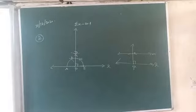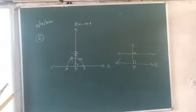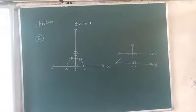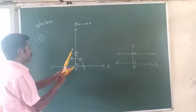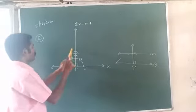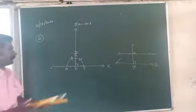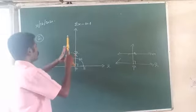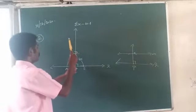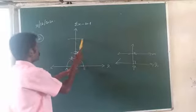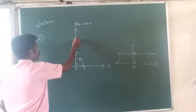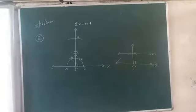Now, on this perpendicular, choose a point X 4 cm away from L. Take 4 cm in a compass. With P as center, draw an arc — where it intersects the perpendicular line, name it X.